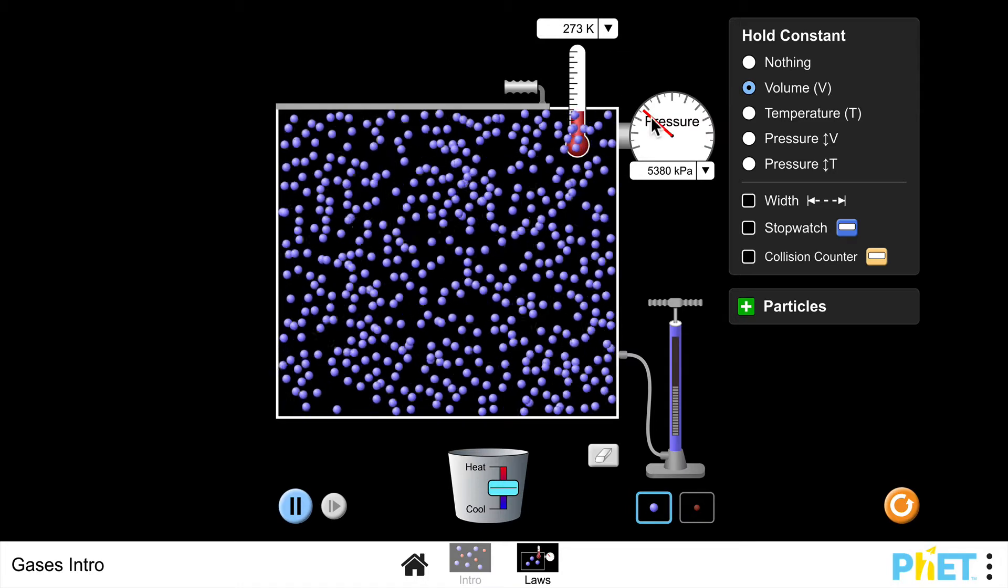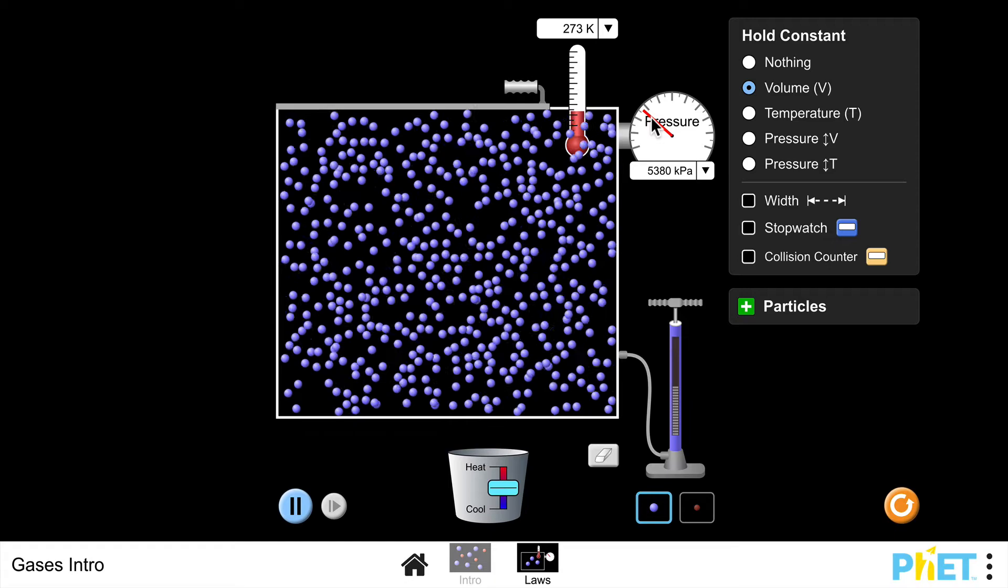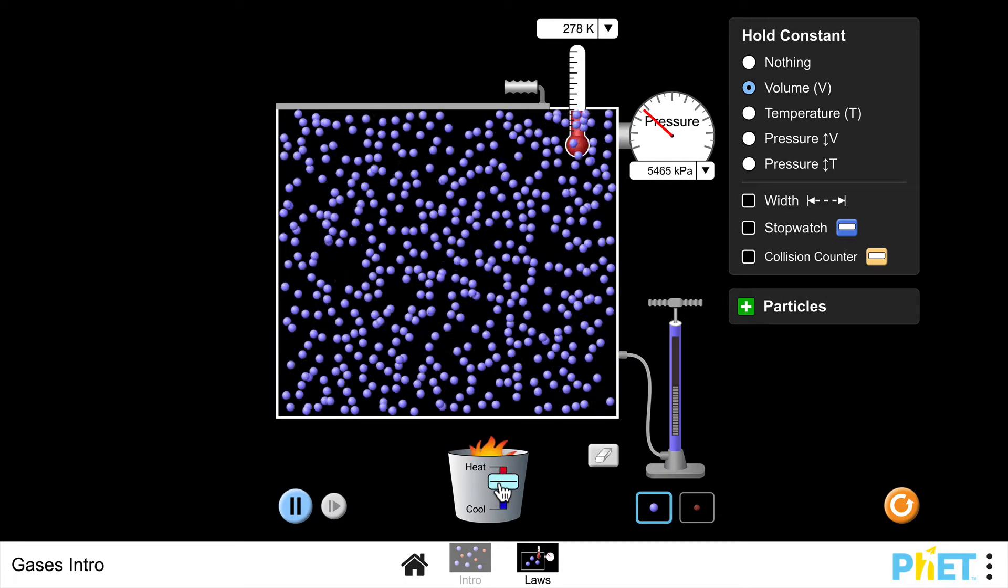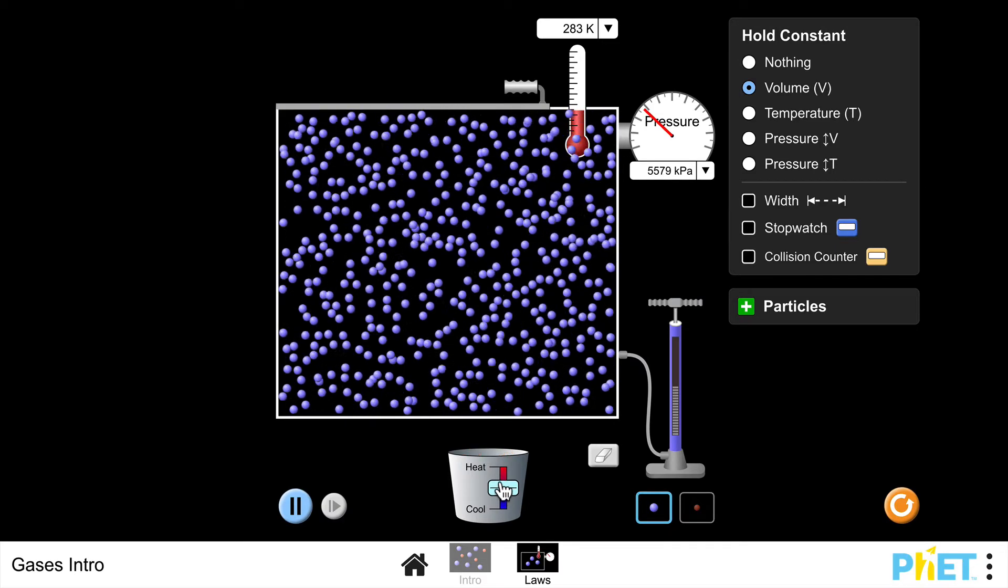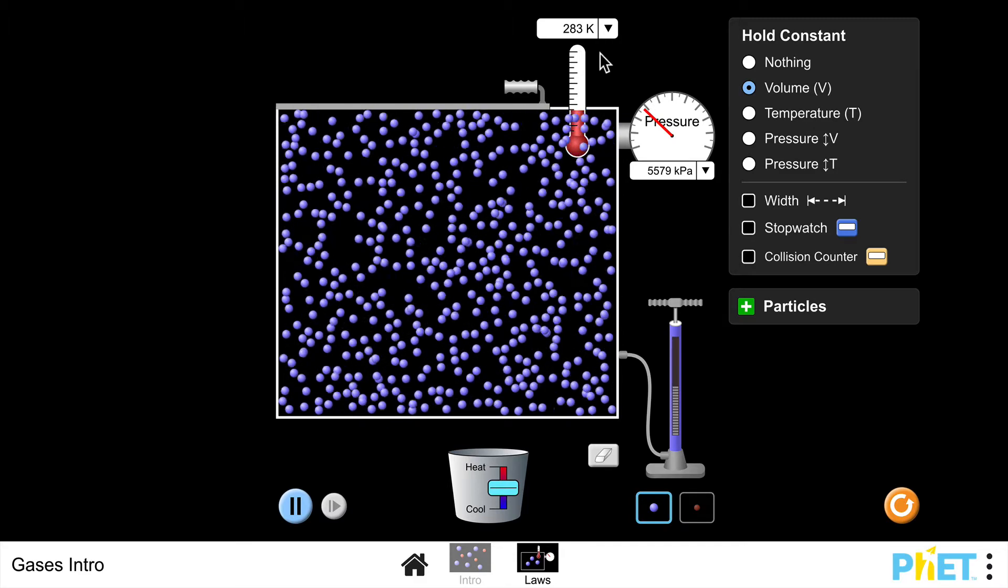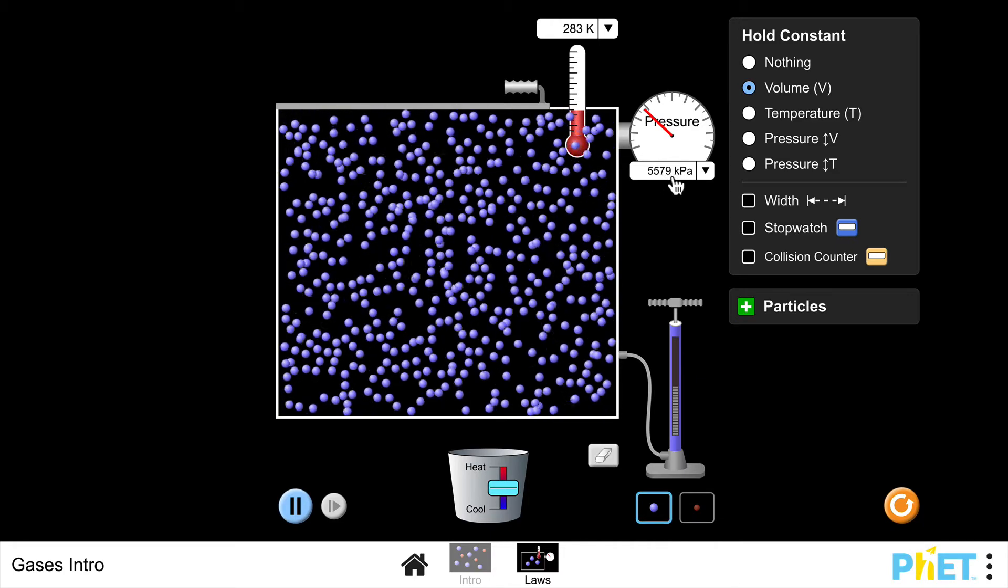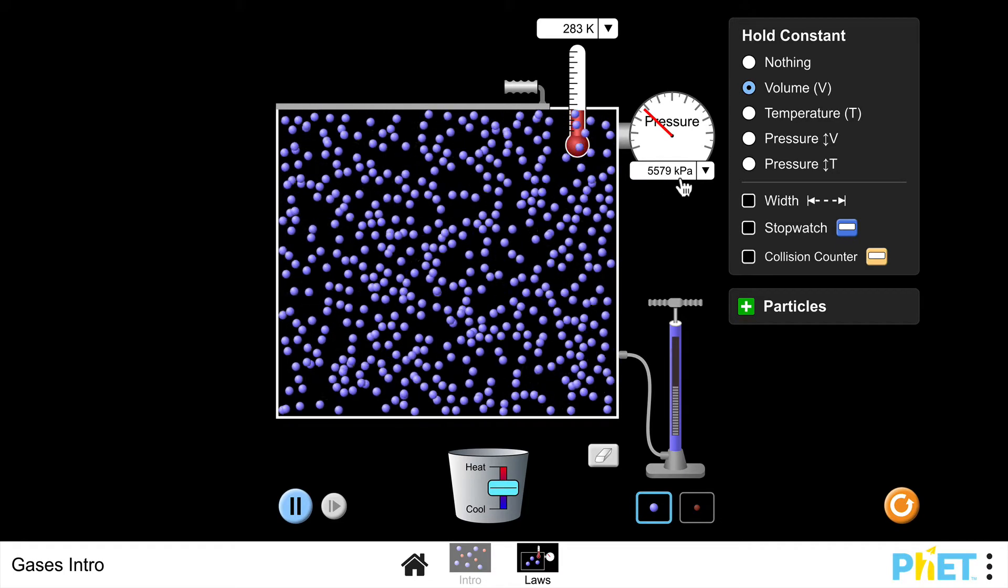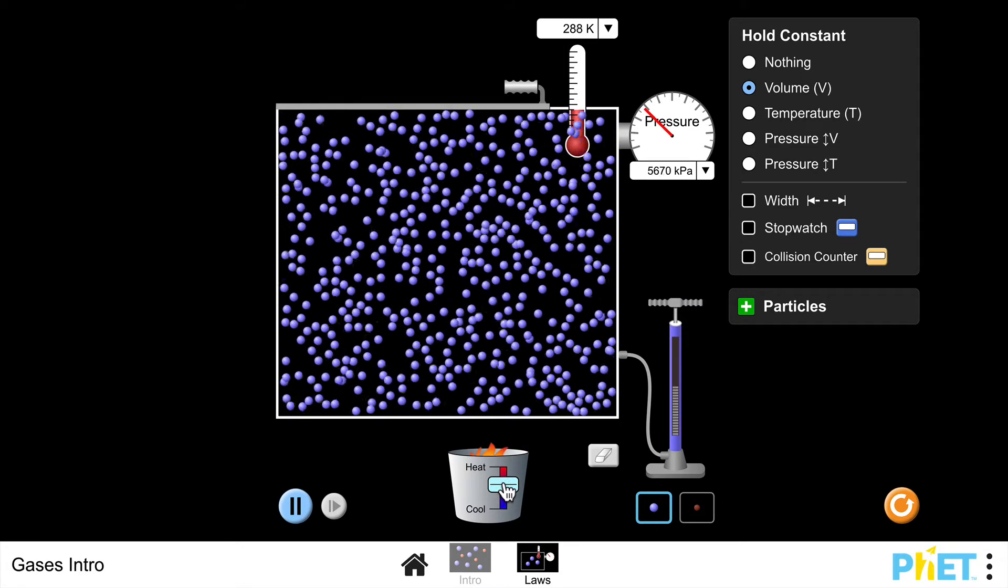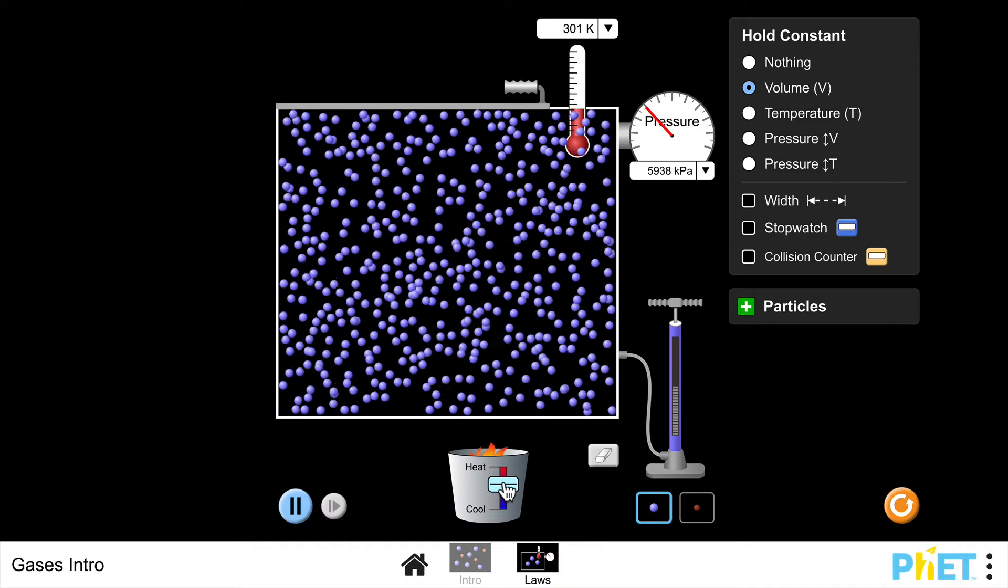Now, I could actually take this as the first reading. So the temperature is 273, the pressure is 5,380 kilopascals. Increase that temperature, and maybe I would take 10 readings, increasing the temperature by 10 Kelvin each time. So there's the second result, 283 Kelvin, and my new pressure is 5,579 kilopascals. Now, I'm not going to do this 10 times, but you will see that basically, if you're looking at that thermometer, as that temperature increases, the pressure also increases as well.